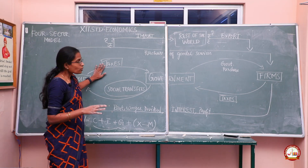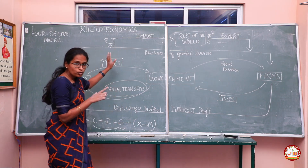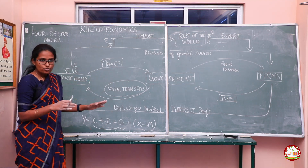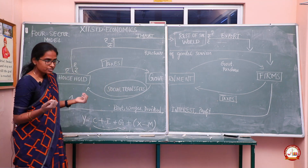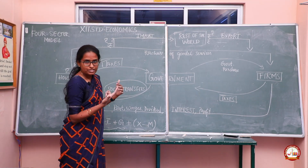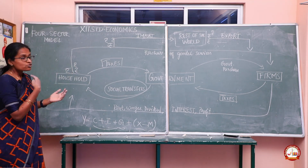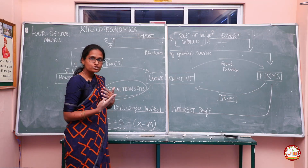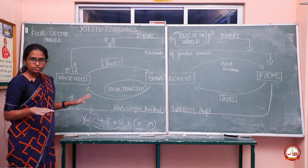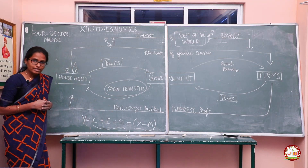One more sector added to the model is the external sector — our economy is connected to the rest of the world. This covers imports and exports. Households can purchase goods and services from firms, but some resources lacking in our economy are imported from other countries, while we also export some goods and materials. This is what the four-sector model covers. Thank you, see you in the next video — until then, be safe.